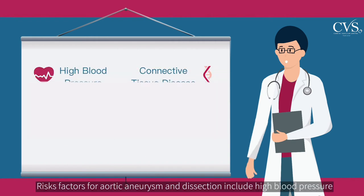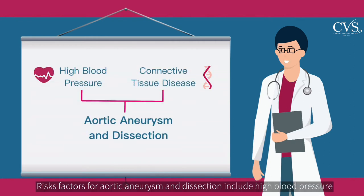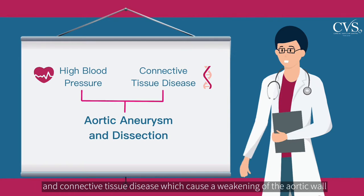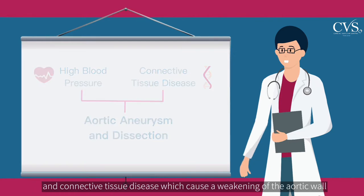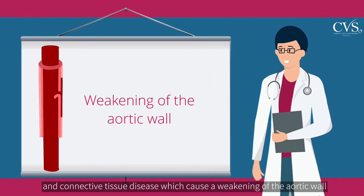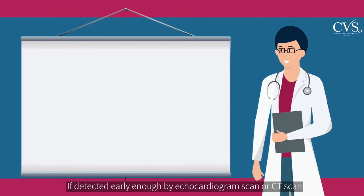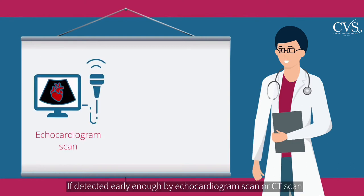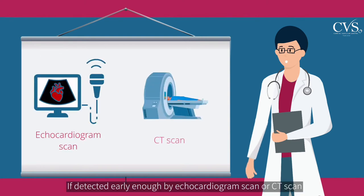Risk factors for aortic aneurysm and dissection include high blood pressure and connective tissue disease, which cause a weakening of the aortic wall. If detected early enough by echocardiogram scan or CT scan,